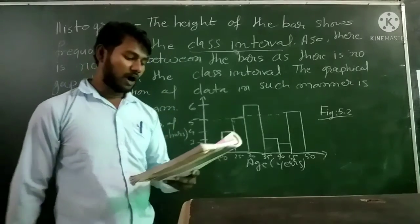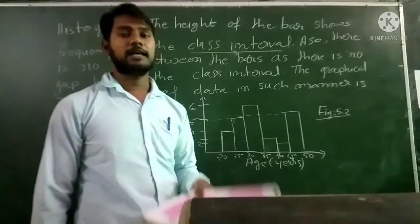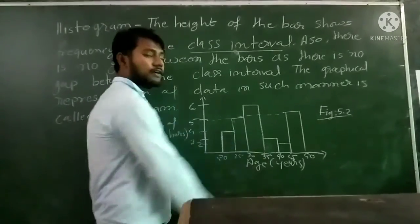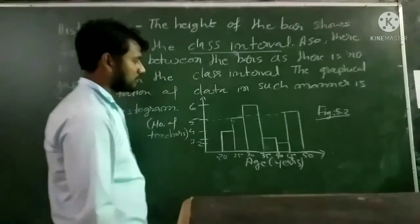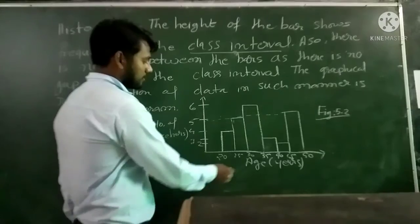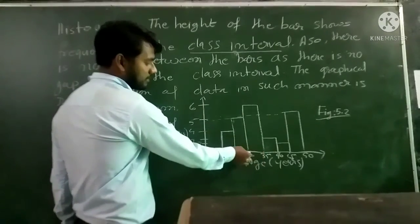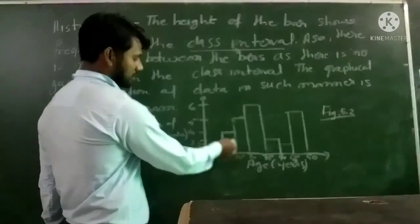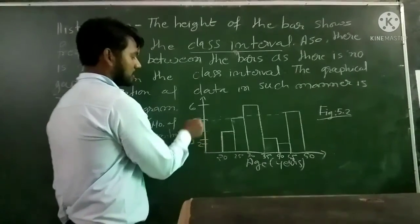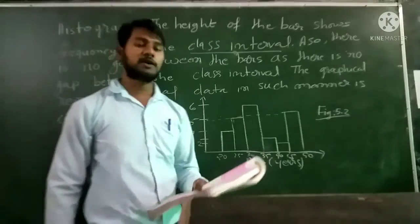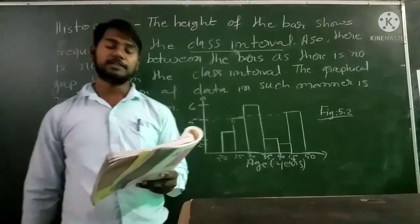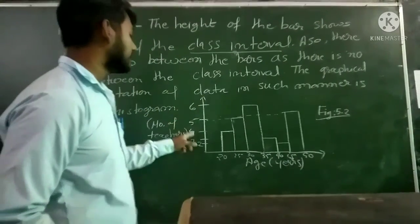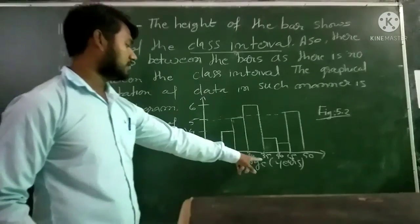The second question is: how many teachers are of age less than 35 years? For this, we look at bars below 35: the bar for 25-30 gives 4, for 30-35 gives 5, and for age less than 25 gives 6. So 4 plus 5 plus 6 equals 15. The number of teachers of age less than 35 years will be 15.